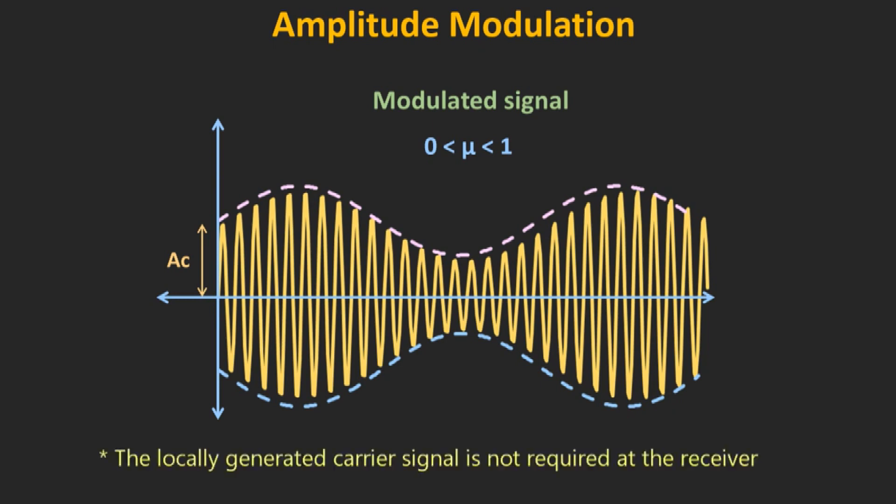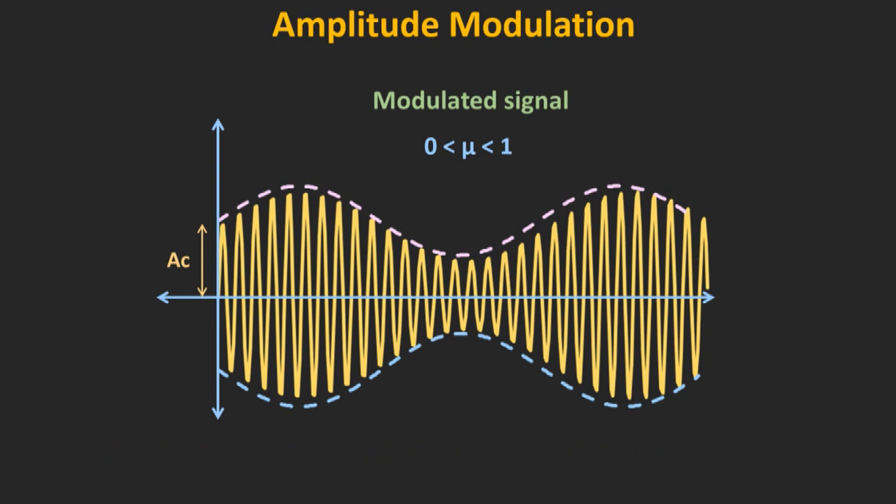Non-coherent means that for the demodulation of the AM signal, the carrier signal is not required at the receiver end. In this video, we will understand the working of this envelope detector and at the later part of the video, I will also show you some simulations. But before that, let's quickly revise a couple of points.